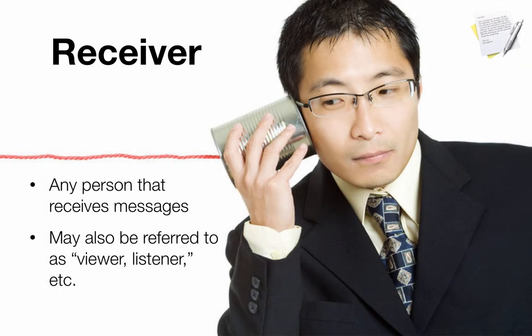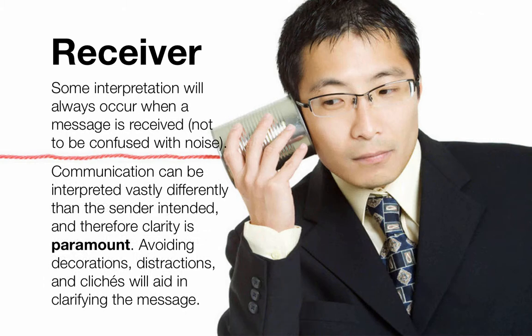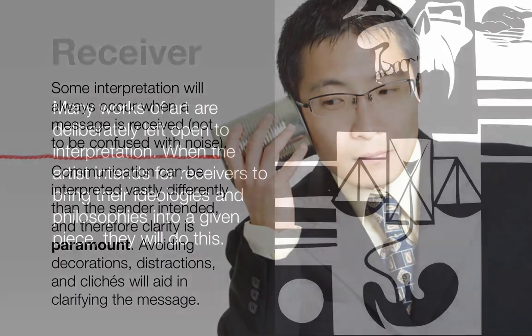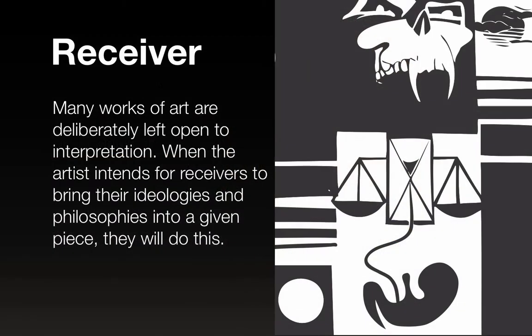Receiver is any person that receives messages — also referred to as viewer or listener. Some interpretation will always occur when a message is received. That's not to be confused with noise; it's not a technical problem, it's just that the receiver's brain is interpreting it. Communication can be interpreted vastly differently than the sender intended, and therefore clarity is paramount. Avoiding decorations, distractions, and clichés will aid in clarifying the message. Many works of art are deliberately left open to interpretation, when artists intend their receivers to bring their own ideologies and philosophies into a given piece.